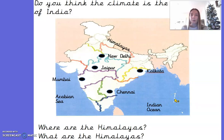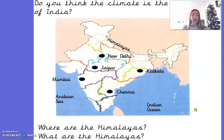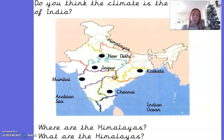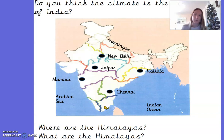Let's have a look at our map of India. We can see the map of India which shows different place names we've also looked at this week. Do you think the climate would be the same in all of India, bearing in mind that India is a very big country especially compared to the UK? Do you think the weather is going to be the same across the whole country — for example, would they experience the same weather in the Himalayas as towards the bottom of the country?